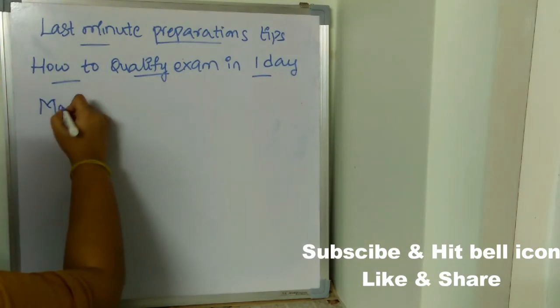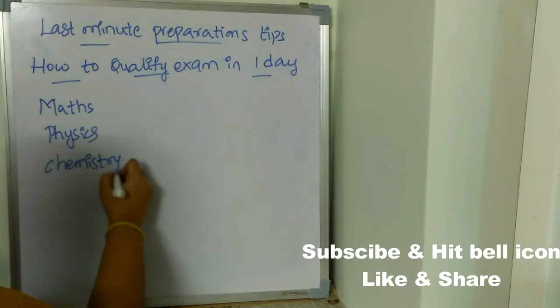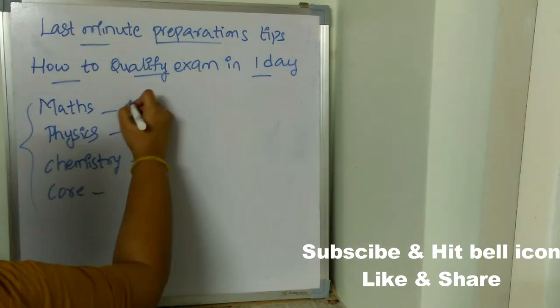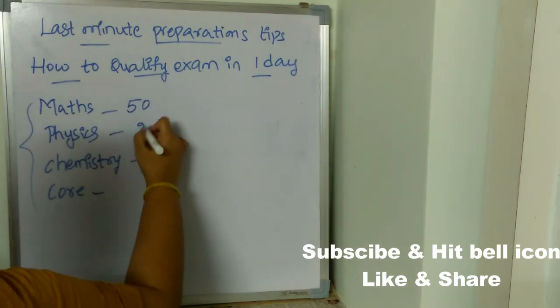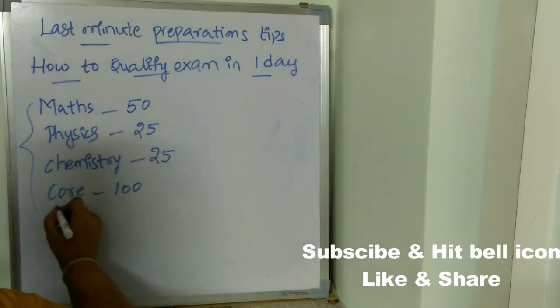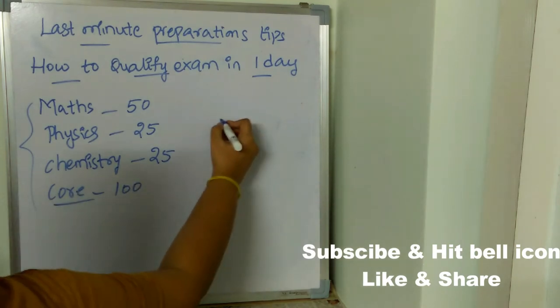There will be four different sections: maths, physics, chemistry, and your core. There will be questions from four different sections. Max marks will be 50, physics 25, chemistry 25, and 100 marks will be from core. We all know the qualifying marks is just 25%.